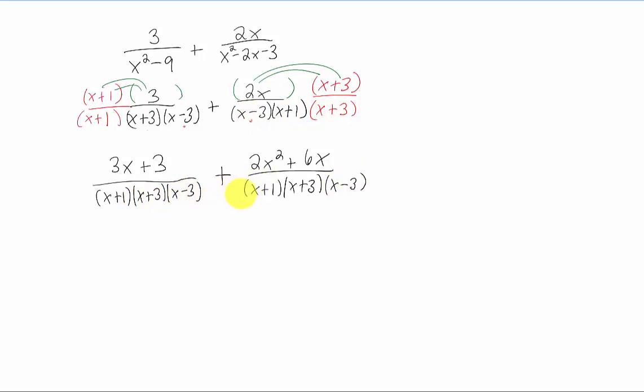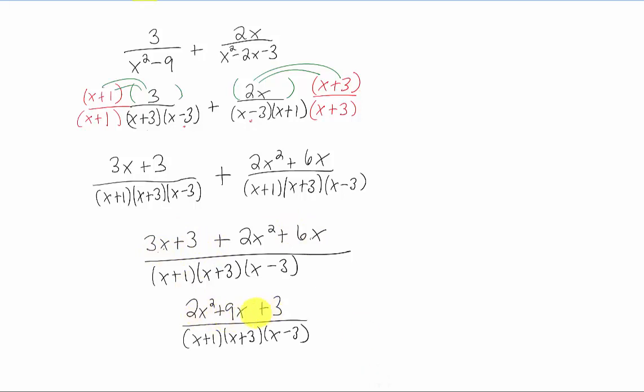Now we clearly have the same denominator so we can just add the two numerators together. Keep in mind we might have a couple of like terms here - 3x and 6x. Can we factor this numerator to potentially cancel something from the denominator? You could try but it doesn't look like it works out. This is just going to be your answer.